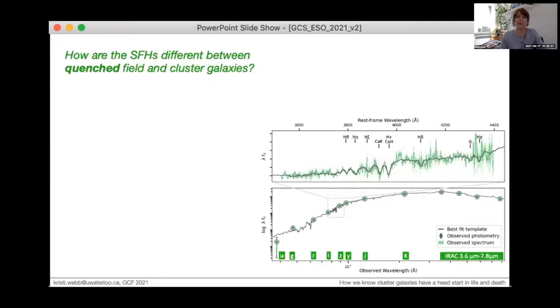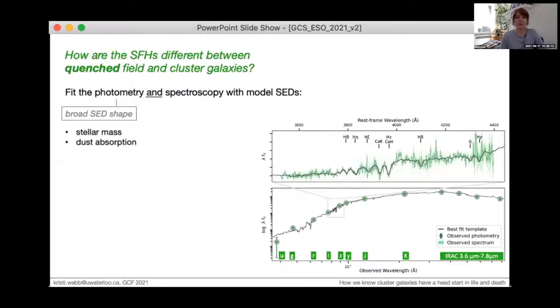To do this, we determine the star formation histories of the individual galaxies by simultaneously fitting the SED and rest frame optical spectroscopy. It's important to understand how the combination of the photometry and spectroscopy allows us to make detailed characterizations of the star formation histories. While the photometry constrains the stellar mass and dust absorption and emission from the broad shape of the SED, it's the detailed features in the spectroscopy that constrain the stellar metallicity.